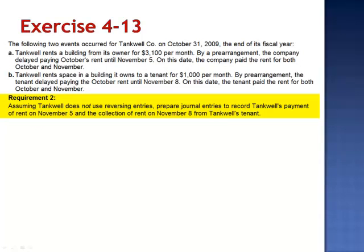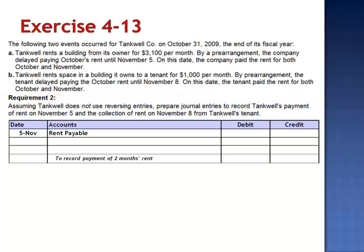Requirement 2 states that assuming Tankwell does not use reversing entries, prepare journal entries to record Tankwell's payment of rent on November 5. We eliminate the rent payable amount of $3,100 that had been accrued as of October 31, record November's rent as rent expense $3,100, and credit cash $6,200. So we're debiting rent payable for the prior month's rent, debiting rent expense for the current month's rent, and crediting cash for the payment of two months' rent.